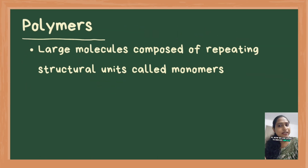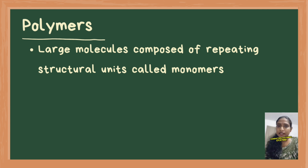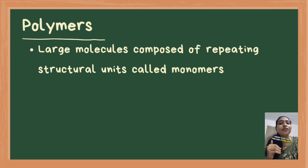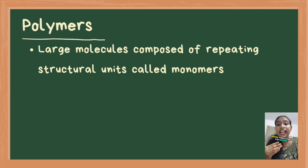Now we are going to discuss about polymers. We will try to brief the topics: industrial manufacture of polymers, specialty polymers, conducting polymers, etc. In the context of chemistry of materials, polymers are large molecules composed of repeating structural units called monomers, linked together through covalent bonds. These macromolecules can exhibit a wide range of properties, making them suitable for diverse applications in industries ranging from consumer goods to advanced technologies.